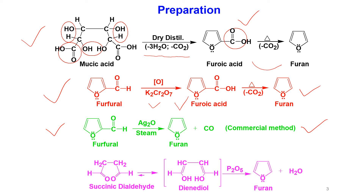We can also prepare furan from succinic dialdehyde. Succinic dialdehyde, after rearrangement, is converted to diandyl. When diandyl reacts with phosphorus pentoxide, the phosphorus pentoxide adsorbs one molecule of water from diandyl, converting it to furan. The conversion from succinic dialdehyde to diandyl was already discussed in my previous lecture video.